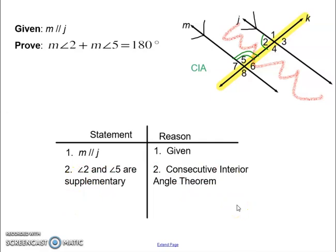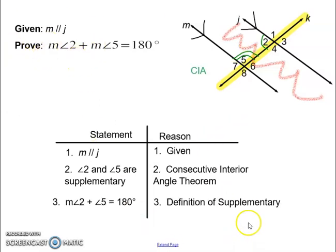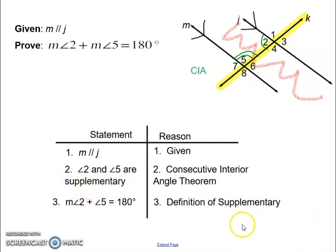The theorem states that if two lines cut by a transversal are parallel, then consecutive interior angles are supplementary. How does that help me get to this? The very definition of supplementary says that two angles added together equals 180. So the measure of angle two plus the measure of angle five equals 180 — that's the very definition of supplementary. I've established my angles are supplementary, so I can use the word anytime I want after that. We have reached what I am trying to prove. We're done.